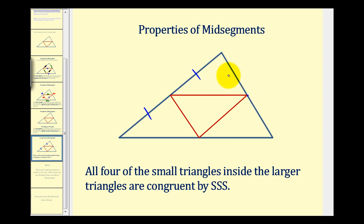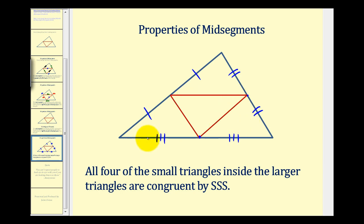And if this is a midpoint, this segment would be congruent to this segment. And if this is a midpoint, this segment here would be congruent to this segment here. Remember, the length of this mid-segment here is half the length of this side of the triangle. Well if this is the midpoint, half of the length of this segment would be the length of this segment here. So this mid-segment is congruent to the segment that makes up half the length of this side of the triangle.